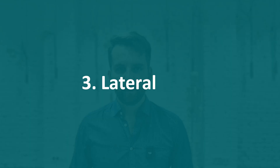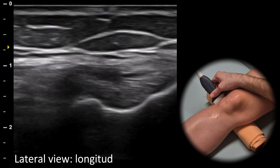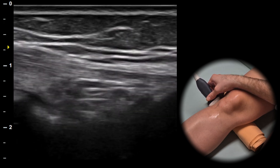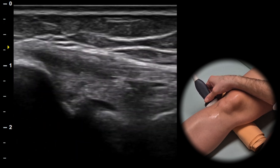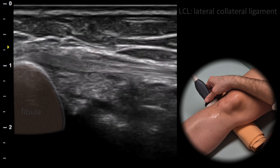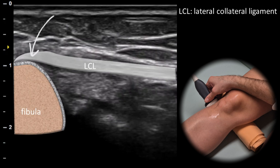The next view is the lateral view. In the longitudinal plane we can identify the lateral collateral ligament, which extends from the lateral condyle of the femur to the head of the fibula.